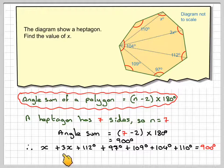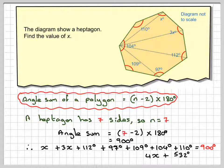So x plus 3x gives me 4x, and then if we add 112, 97, 109, 104, 110, we're going to get 532, and that's still equal to 900.